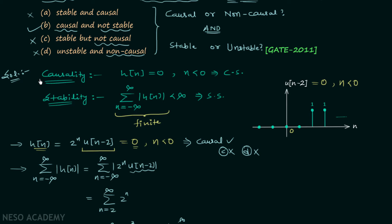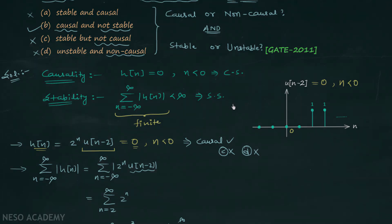Remember the condition for a system to be causal: h[n] must equal zero for all n less than zero. And the condition for a system to be stable: the summation of |h[n]| from minus infinity to infinity must be less than infinity.